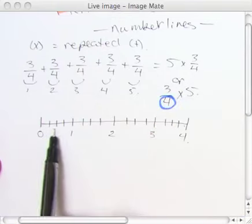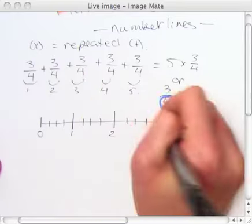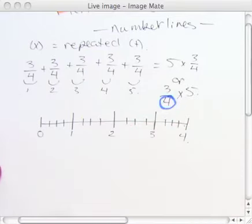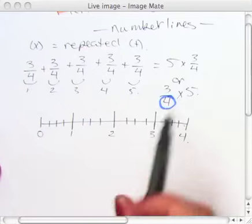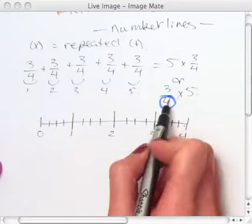Now, each of my segments on my number line are into four parts. Mind you, they're not equal, but I'm not the world's best drawer.